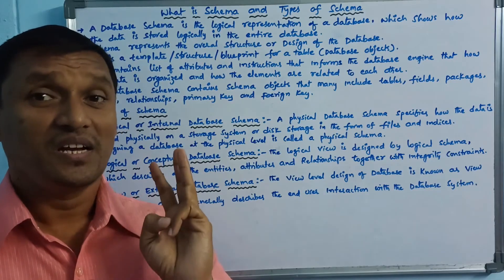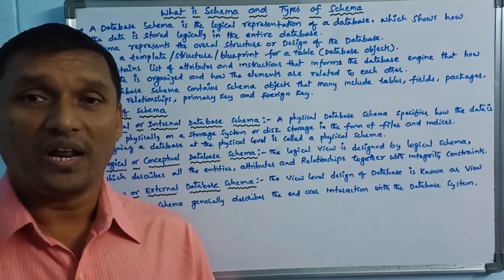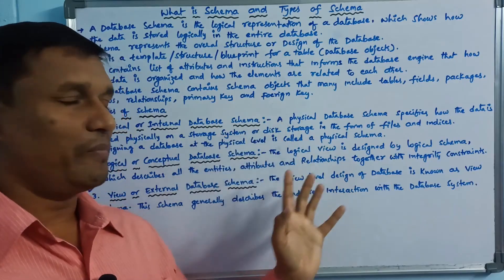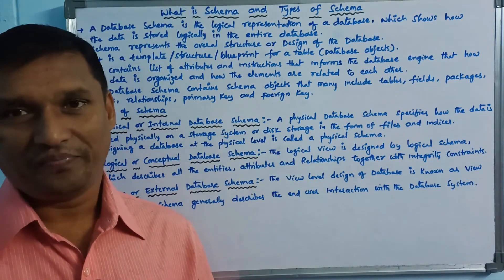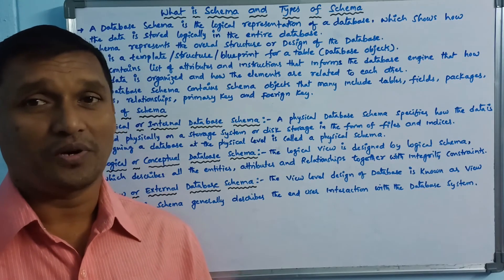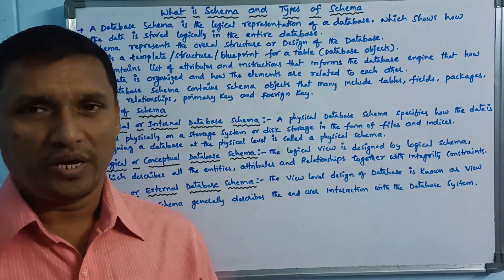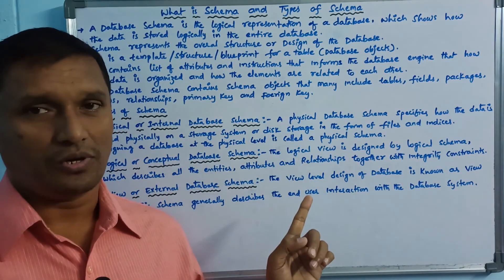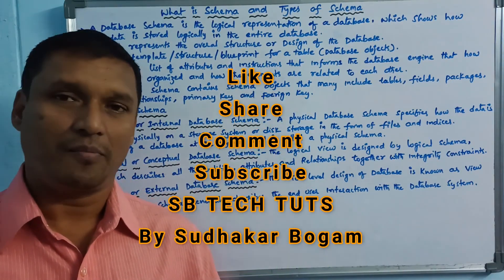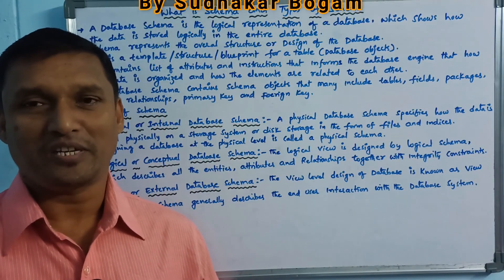So, the database schema has three types: physical schema, logical schema, and view or external schema. This schema is the database design and is easy to understand. Three levels of database architecture. Thank you for watching.